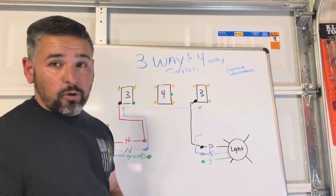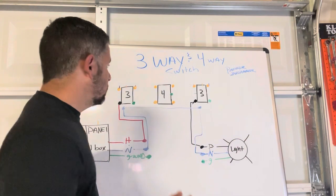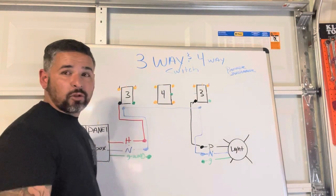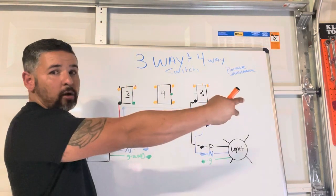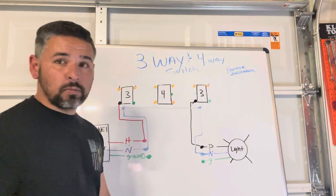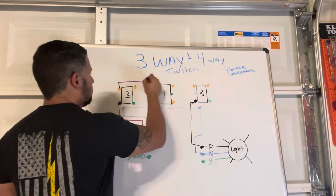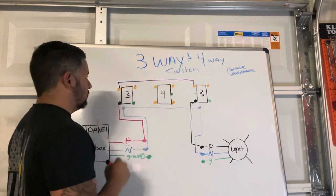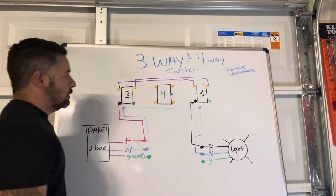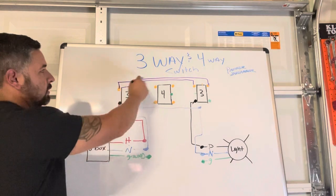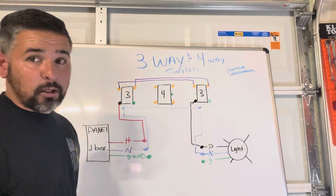So what do we do with these gold terminals on top? Those are gonna be your travelers, which is a terminology that electricians use to signify the two legs going across from three-way to three-way. So in this particular case we're gonna go there, so that's one of the pair of travelers, and then here's the second pair of travelers.